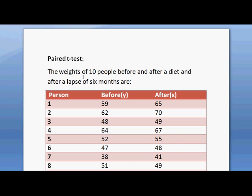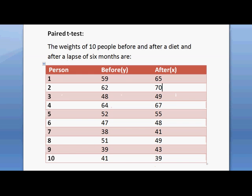The question is: the weights of 10 people before and after a diet, after a lapse of six months, are as follows. For person 1, the before weight was 59 and after weight is 65. For person 2, the before weight is 62 and after weight is 70. Likewise, for the other people also, the before and after diet weights are given.